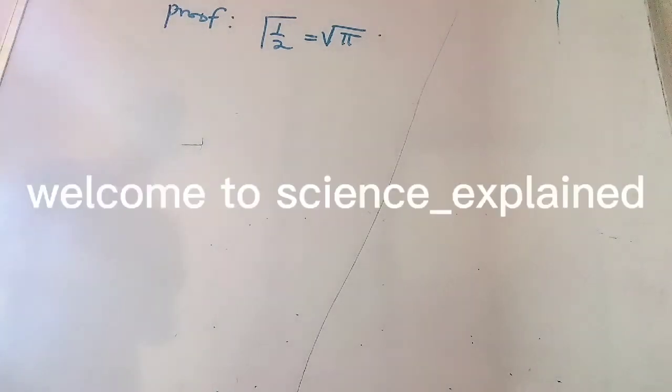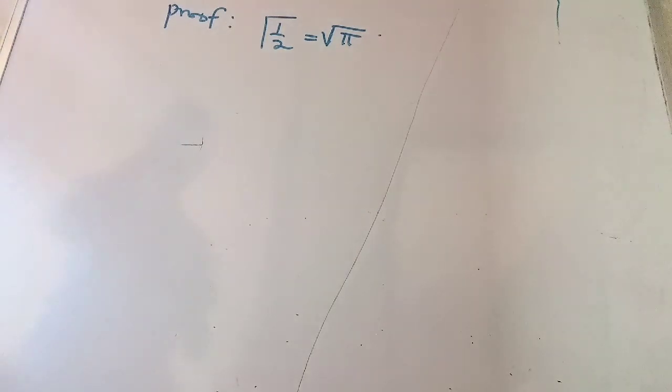Now, how do we prove this? We need to formulate. First, we have to record the formula for gamma of n and a statistical formula for square root of pi.